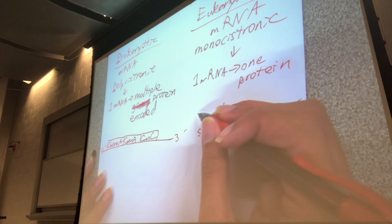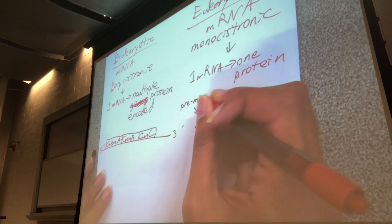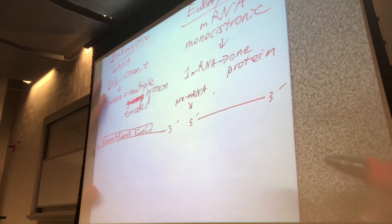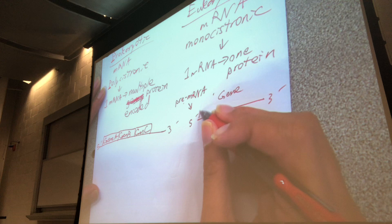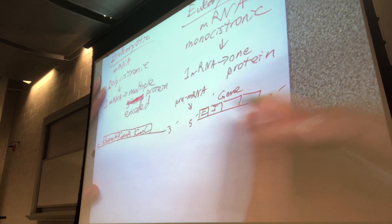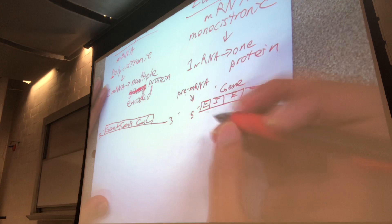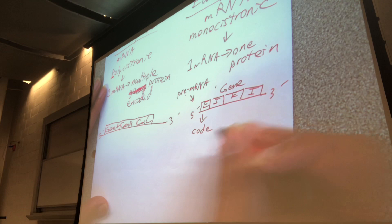In eukaryotic genes, when transcribed, it produces something called pre-mRNA. Pre-mRNA is a gene transcribed into mRNA but the mRNA still contains a mixture of exons and introns. Your exons are the parts of the mRNA that actually code for a protein; your introns do not.